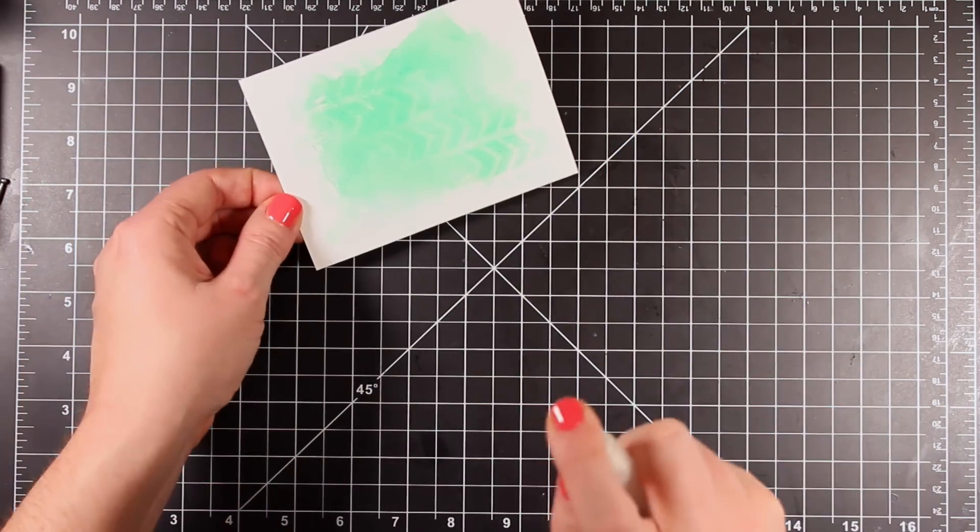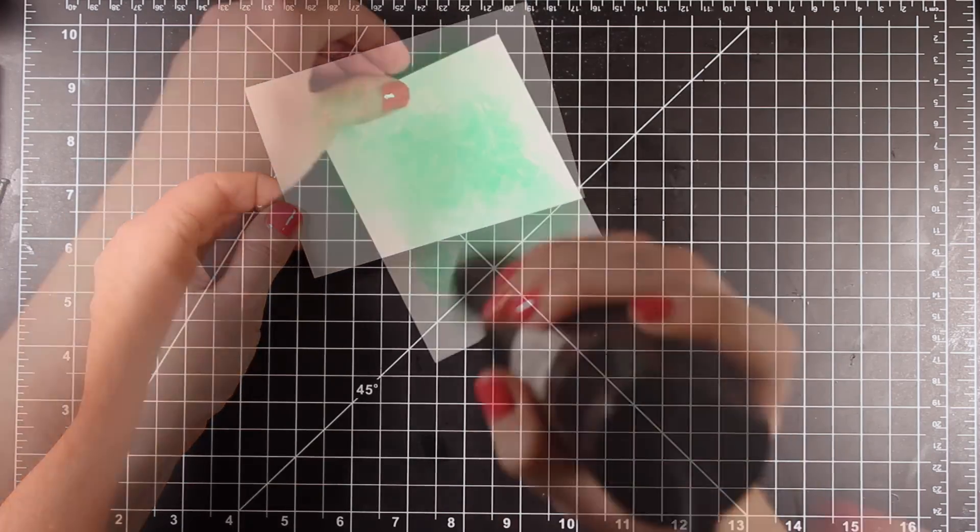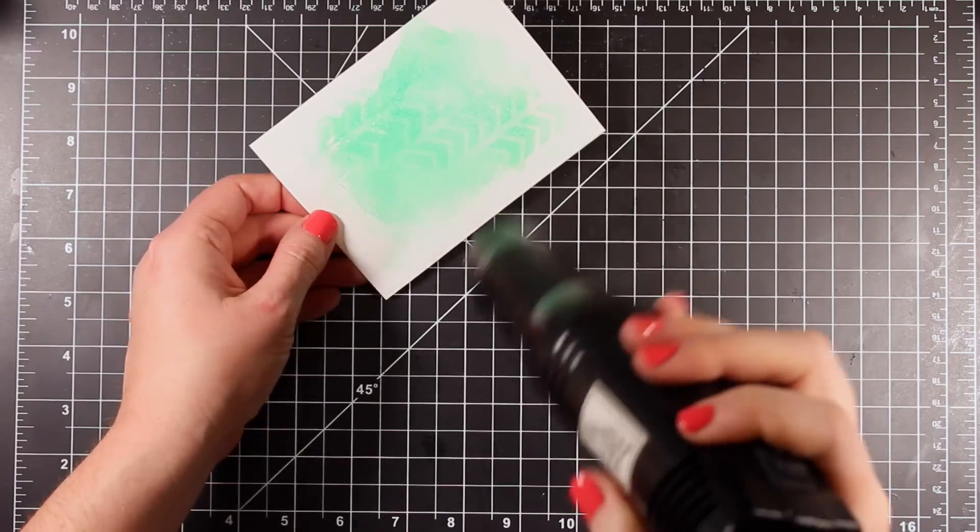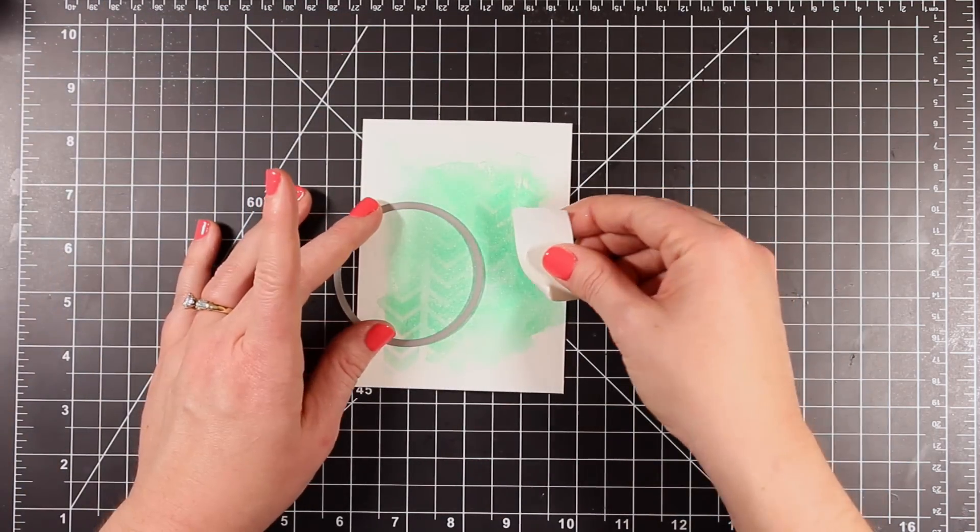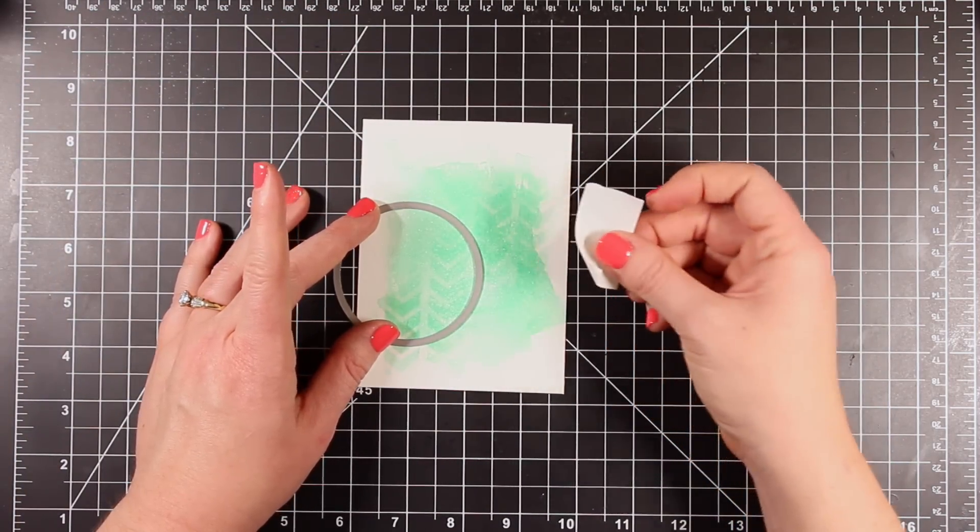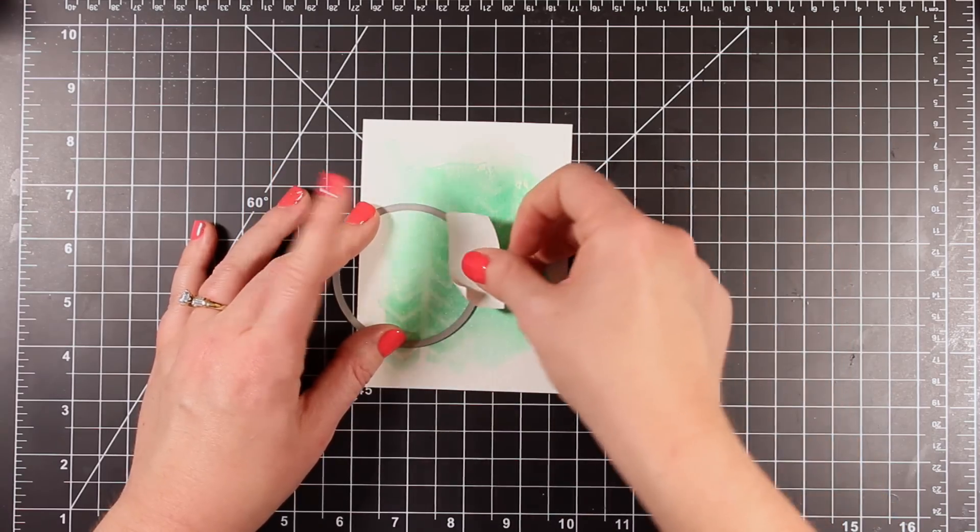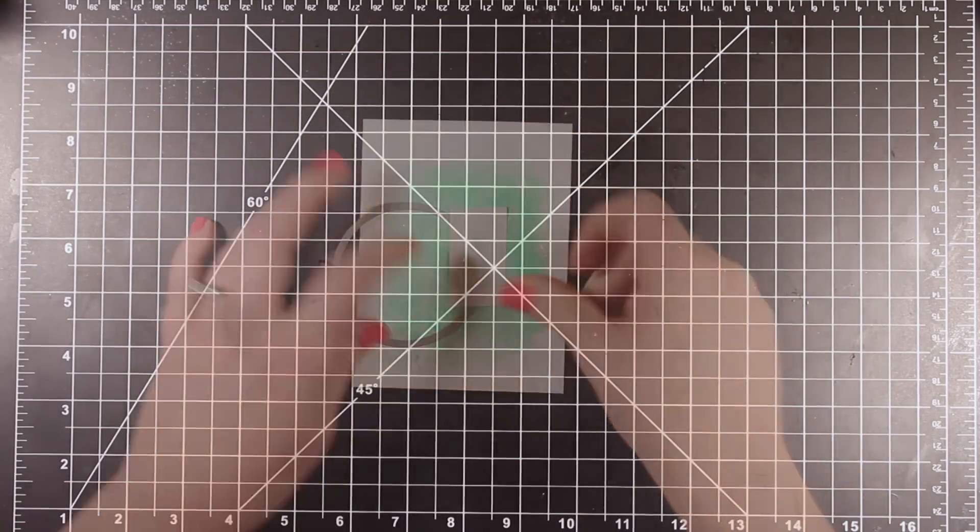Now I thought it would be cool to add some shimmer to this. I'm taking my Perfect Pearl Water and I'm lightly spritzing it, and then I went immediately with my heat tool to dry that because I didn't want the color to move around. Because Distress Inks react with water, it will move the color around.